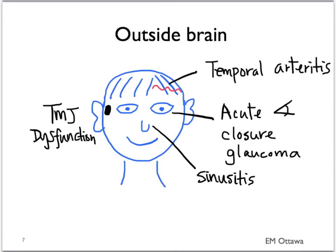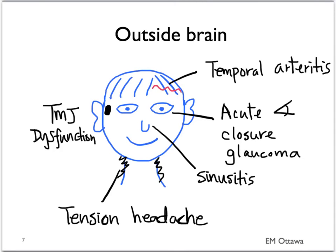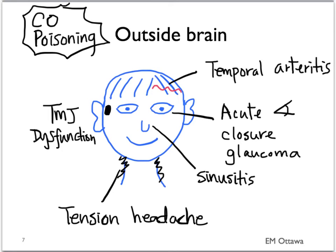Going further down, tension headaches can be caused by tight muscles from the neck and shoulders. An external cause that we often forget is carbon monoxide poisoning. These are the most common causes for headaches caused outside of the brain.